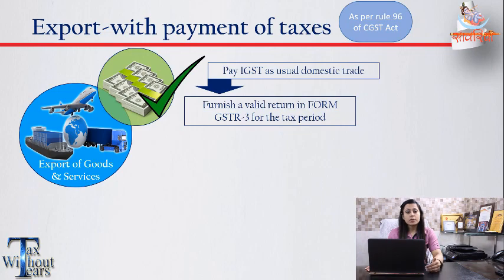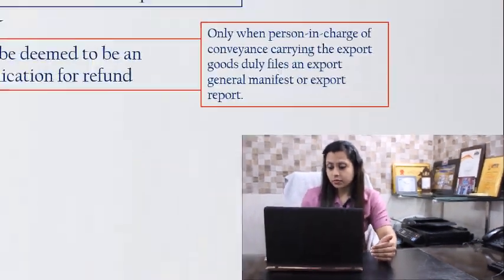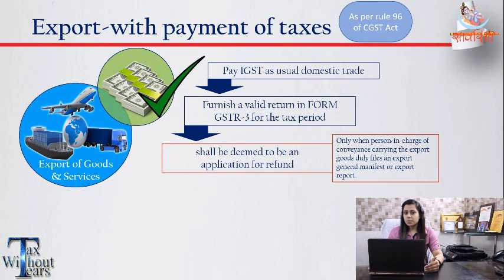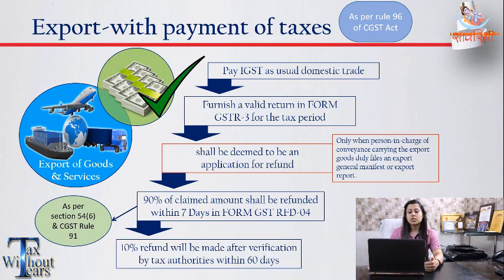Once GSTR-3 is filed, it shall be considered as a deemed application for refund, provided that the person in charge of the conveyance has filed the EGM, i.e. Export General Manifest, or the export report before GSTR-3. Then 90% of the tax paid can be claimed as refund within seven days in form GSTRFD-04, and the remaining 10% will be given after proper scrutiny of the exports by the tax authority within the next 60 days.